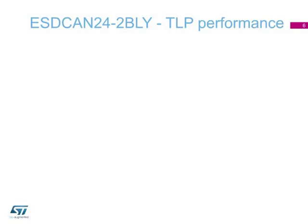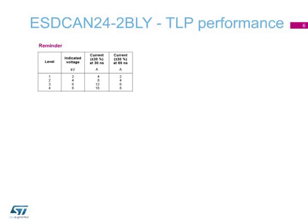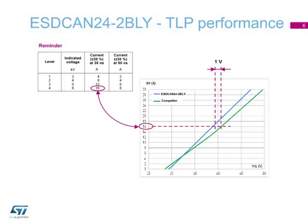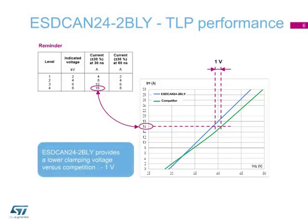ST Microelectronics introduced several years ago a CAN protection called ESD CAN 24-2-BLY. TLP measurement is a method to test ESD response by measuring clamping voltage at a given surge current. TLP tests have been performed to compare competition products and ST's ESD CAN 24. This is generally measured around 16 amps to match with the ESD standards. The TLP curve shows an advantage for ST as the clamping voltage is lower during the TLP test at 16 amps. However, the difference is small — 1 volt — and both products are very close to the 40-volt limit of the circuit to be protected.